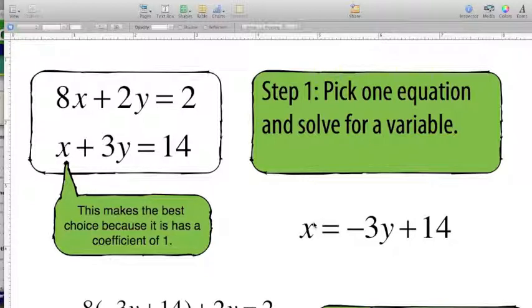Now that I have something that's equal to x, I'm going to take this x, or really just take the other side. Because this is equal to x, I'm allowed to substitute negative 3y plus 14 in for any x's that I have.